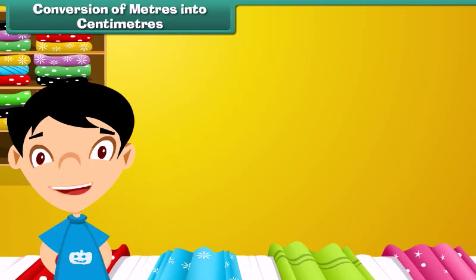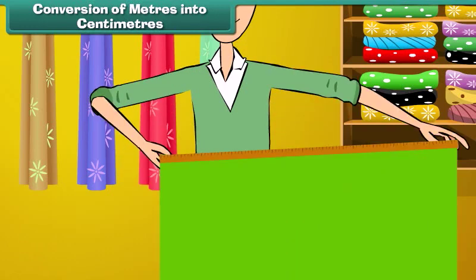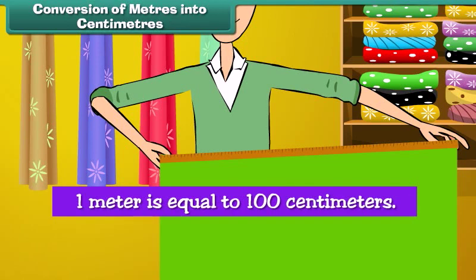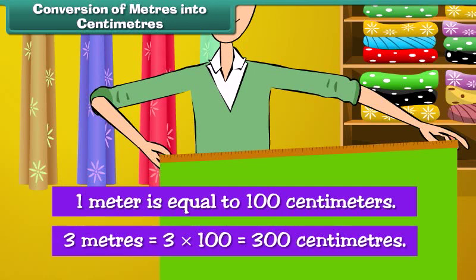Conversion of meters into centimeters. It is time to understand the relationship between meters and centimeters. We will then convert meters into centimeters. One meter is equal to 100 centimeters. Three meters is equal to 3 into 100, which equals 300 centimeters.